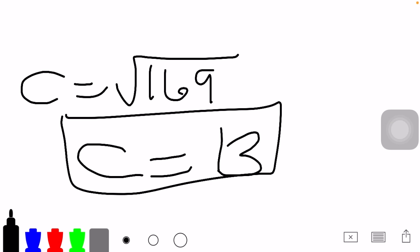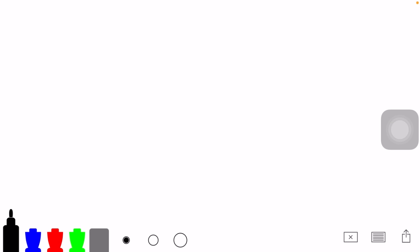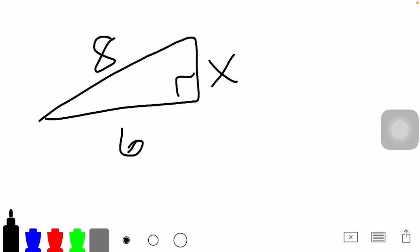Now, let's try a harder example. So this time, we know that the longest side of the triangle is 8, and one of the sides is 6. Now, we need to find what is this side. In this case, we already know that C is 8, so we have 8 squared.